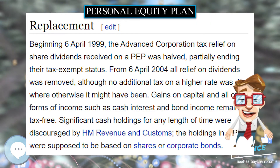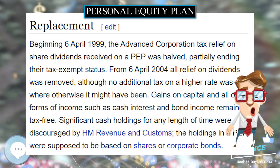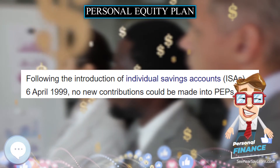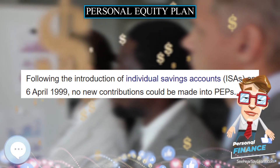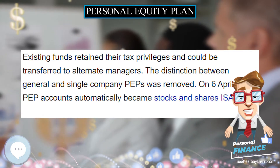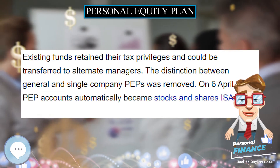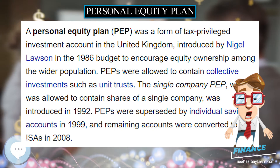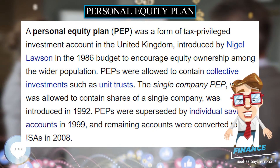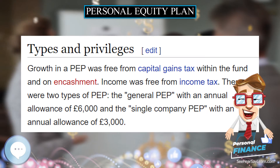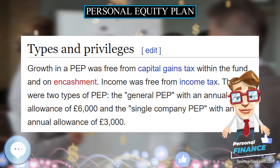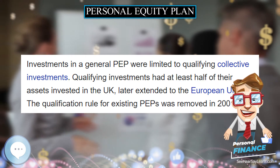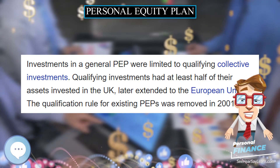Beginning 6 April 1999, the advanced corporation tax relief on share dividends received on a PEP was halved, partially ending their tax-exempt status. From 6 April 2004, all relief on dividends was removed, although no additional tax on a higher rate was due where otherwise it might have been. Gains on capital and all other forms of income such as cash interest and bond income remained tax-free.